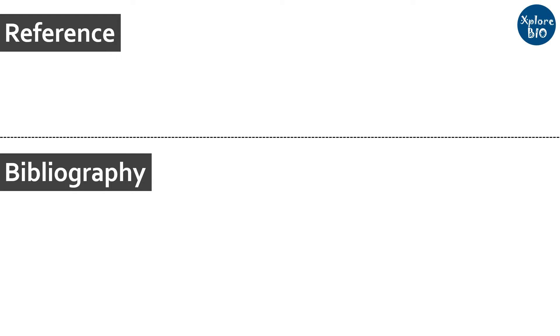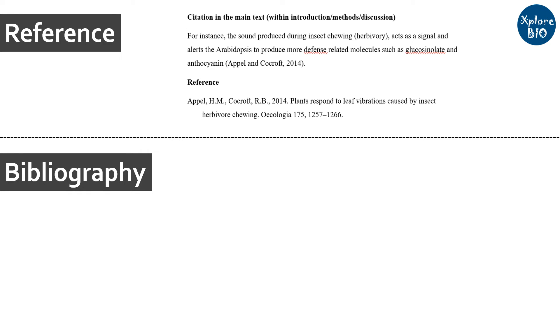Reference and bibliography both reflect the literature you referred to for your study. But the major difference between the two is that a reference is a list of all the literature that you have cited in various sections of your manuscript or research article. References are provided at the end of research articles, reviews, or book chapters.